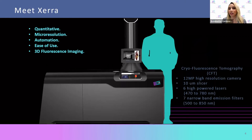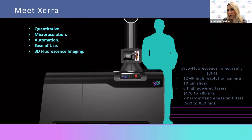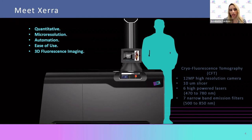I want you to meet the platform, Xera, and what makes it unique. It features a high-resolution 12-megapixel camera and automated slicing — those days of handheld cryo stats are over. We also have six high-powered lasers and seven narrowband emission filters. For those who do fluorescence imaging, there's a wide array of fluorophores, and those who worry about depth penetration or multiplexing will find our platform addresses all of these things.